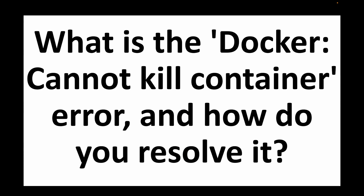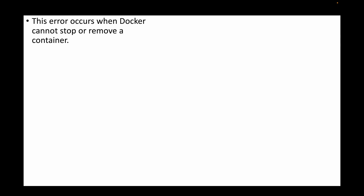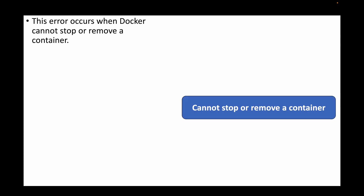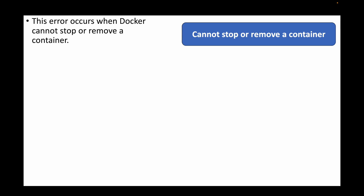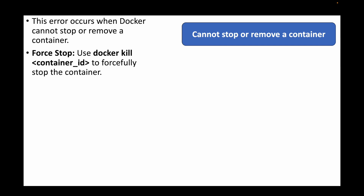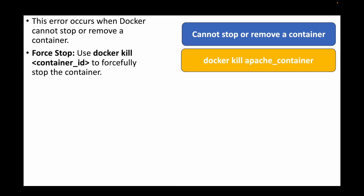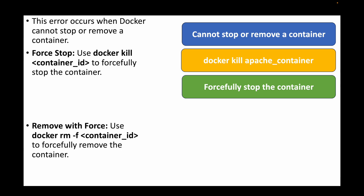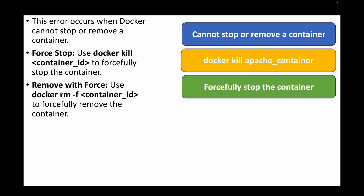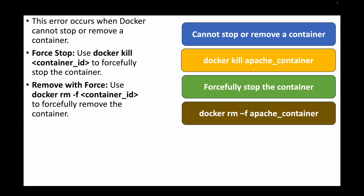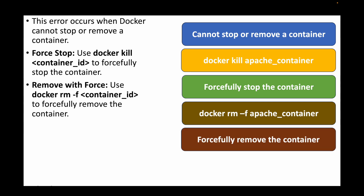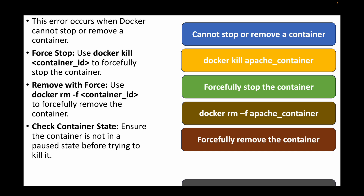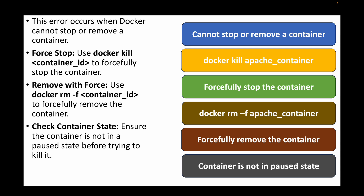The next question is: what is the 'Docker cannot kill container' error and how do you resolve it? When trying to delete a container, it must be stopped first. You can forcefully stop the container using `docker kill <container_name>`. Once stopped, forcefully remove it with `docker rm -f <container_name>`. Also ensure that the container is not in a paused state before trying to kill it.